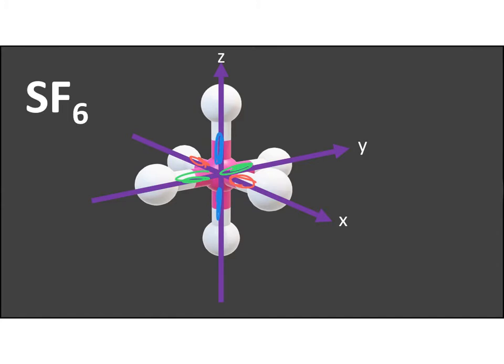So we are looking at d-orbitals that have their lobes along the axes. We know that the px, the py and the pz have lobes along the axes, so we are looking for the d's that are going to have the same.